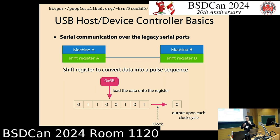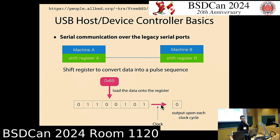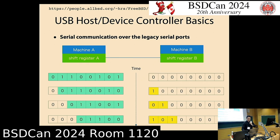Using serial access, you can get communication between two machines. Serial communication means a single wire or a few wires deliver data using voltage changes in a time-division manner. If you want to send the data as 0x65, you think of it as a bit string, and a single clock sends one bit over the wire.